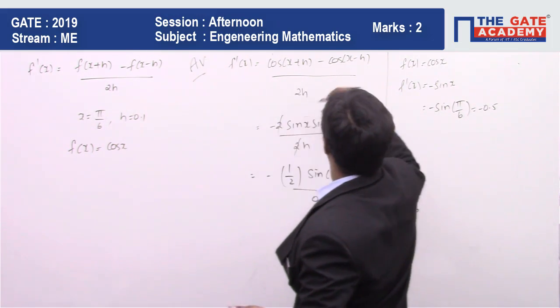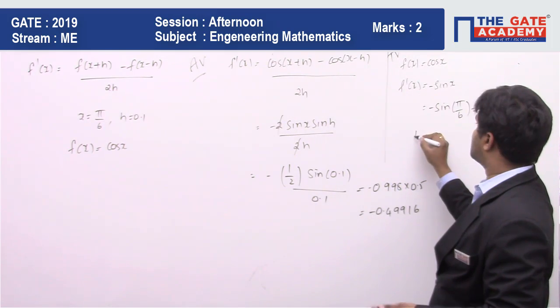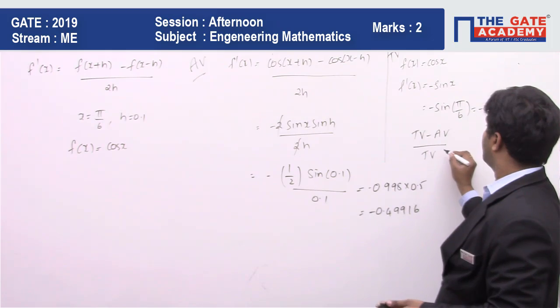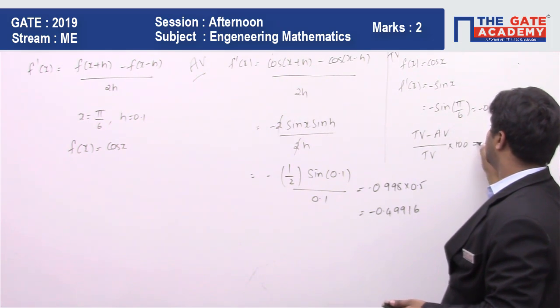So true value minus approximate value divided by true value multiplied by 100 is going to give you the percentage error.